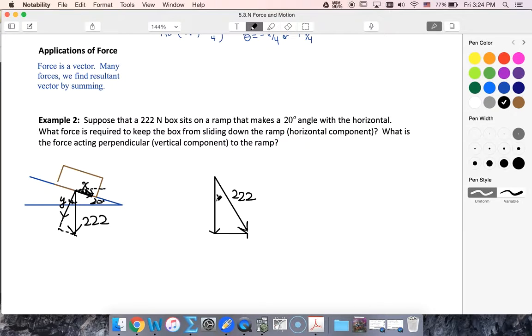So this was my 20 degrees here. Here's my x. So I can say that sine 20 is x over 222. I could say that cos 20 is equal to y over 222.